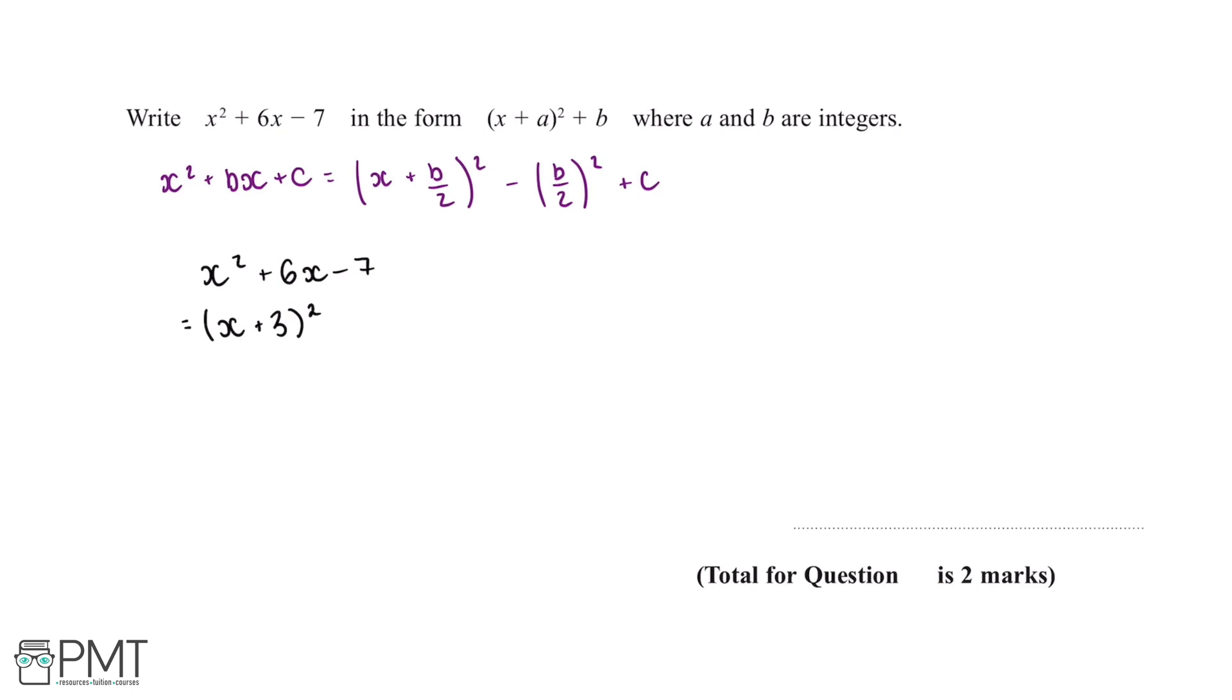Now if we were to expand out this expression, this would give us x squared plus 6x plus 9. The reason that we minus this b over 2 squared is so that it's equal to x squared plus 6x.